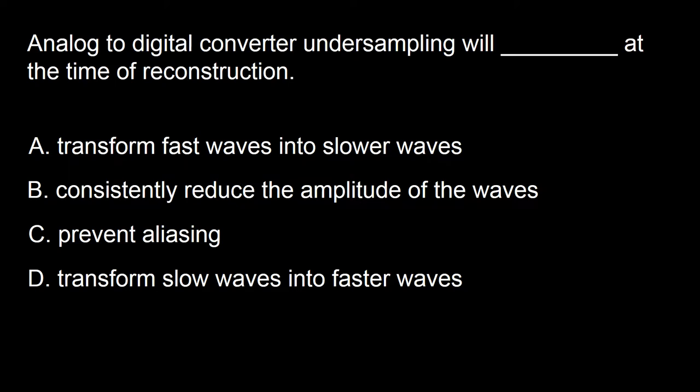Next question: analog-to-digital converter under-sampling will dash at the time of reconstruction. A: transform fast waves into slower waves, B: consistently reduce the amplitude of the waves, C: prevent aliasing, D: transform slow waves into faster waves.